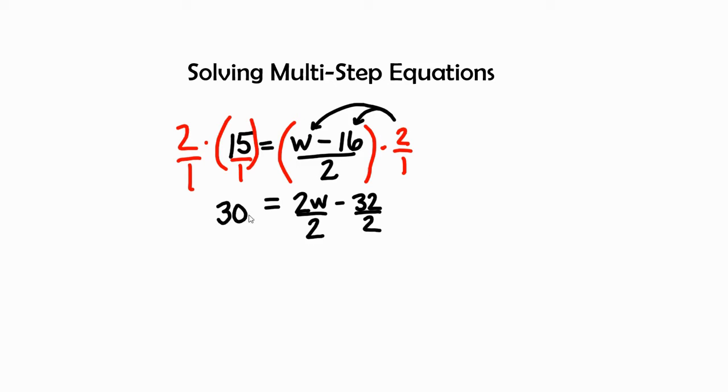So now let's go ahead and simplify this problem. We have 30 equals 2 divided by 2 is w. We have that variable by itself minus 32 divided by 2, or negative 32 divided by 2 is negative 16. Now we have a simplified version.